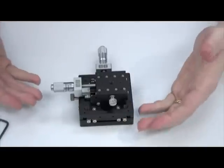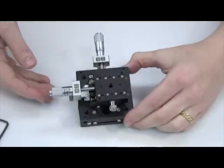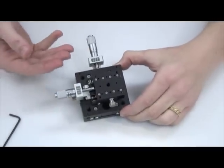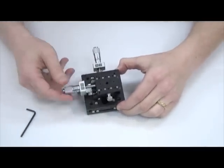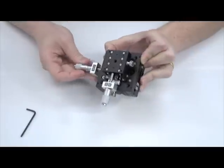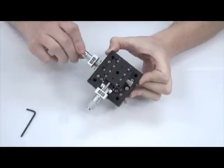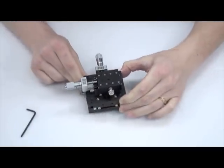As you can see, in just a couple minutes we combined two single axis cross roller translation stages to complete an XY axis system, allowing for repeatable adjustments and precise alignment in two directions.